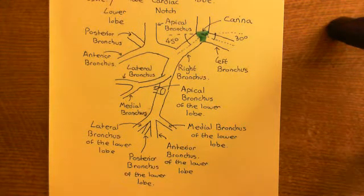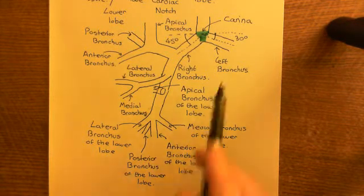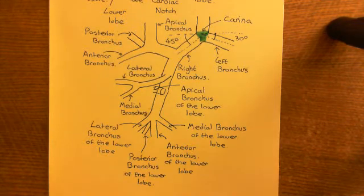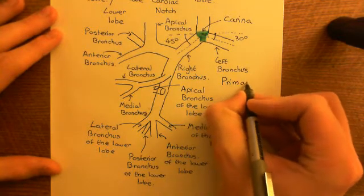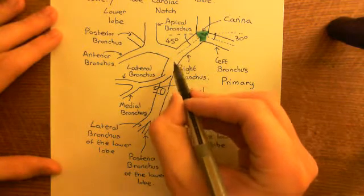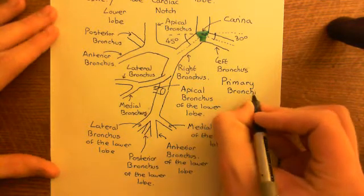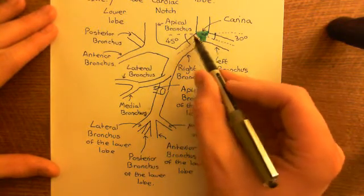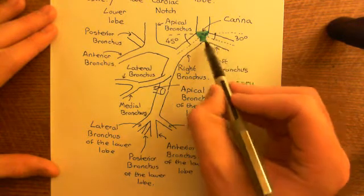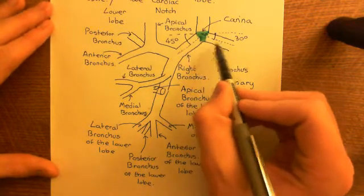Welcome back to this next video in which we are discussing the tracheobronchial tree. Before we turn our attention to the left side of the bronchial tree and the divisions of the left bronchus, I want to give you some more terminology regarding the different levels of bronchus. Firstly, there is something known as primary bronchi — meaning the right bronchus and the left bronchus, the two major divisions of the carina. Those are the only two primary bronchi.